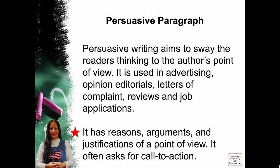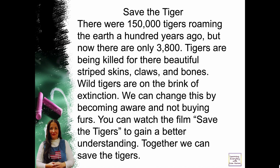Another type of writing is called persuasive writing. Persuasive writing aims to sway the reader's thinking to the author's point of view. This is used in advertising, opinion, editorials, letters of complaint, reviews, and job applications. It presents reasons, arguments, and justifications of a point of view, and often asks for a call to action. Here's a persuasive paragraph: 'Save the Tiger. There were 150,000 tigers roaming the earth 100 years ago, but now there are only 3,800. Tigers are being killed for their beautiful striped skins, claws, and bones. Wild tigers are on the brink of extinction. We can change this by becoming aware and not buying furs. You can watch the film Save the Tigers to gain a better understanding. Together we can Save the Tigers.'